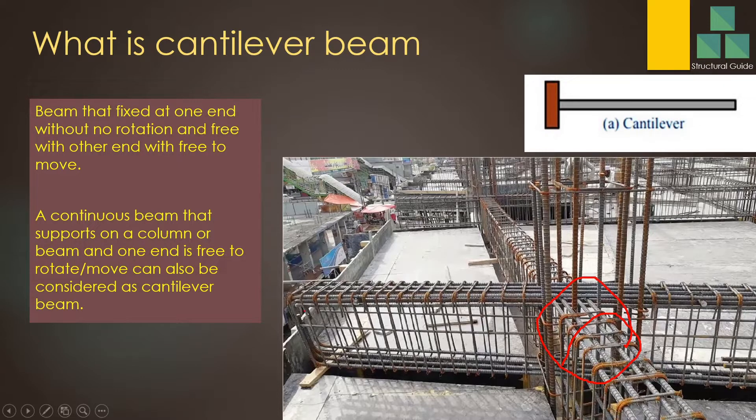You can see in this figure, this point can also be considered as a cantilever beam support. This is the support, this is the free end. This is the cantilever beam. It's a continuous beam - one edge is free and this edge is supported by the column. This can be considered as a cantilever beam.